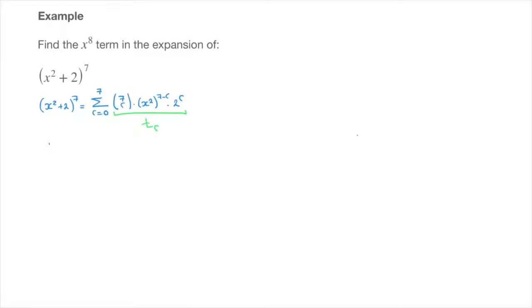I'll copy that general term directly below. That's t sub r equals the binomial coefficient 7 choose r, times x to the power of 2, which in turn is being raised to the power of 7 minus r, times 2 to the power of r.